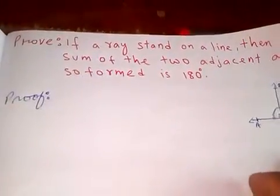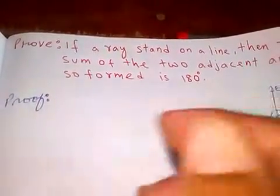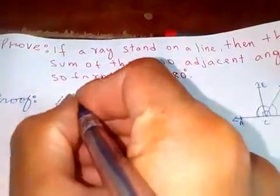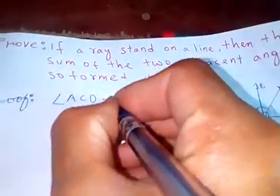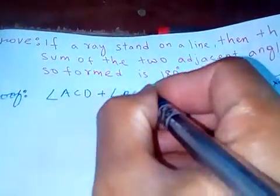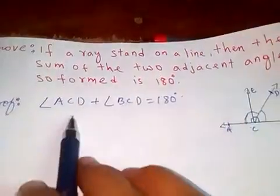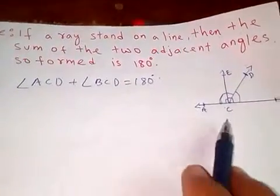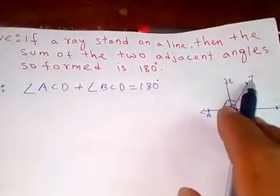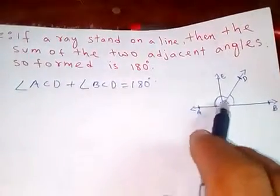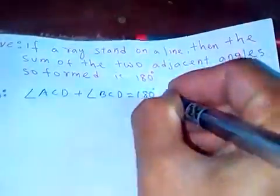Now we have already done some construction. What we are going to prove is angle ACD plus angle BCD is equal to 180. This is our mission. To prove angle ACD and BCD, these two angles, if you add them up, this is our mission.